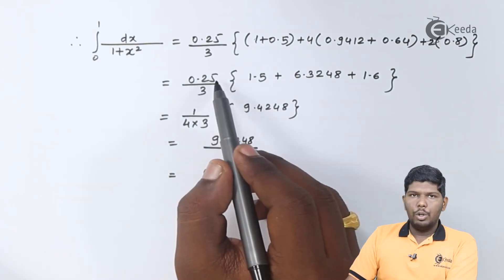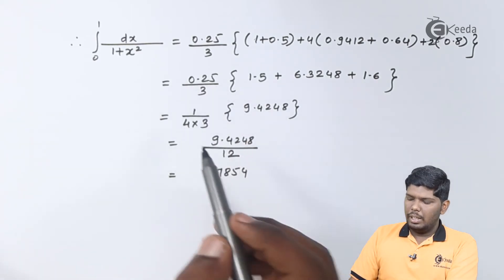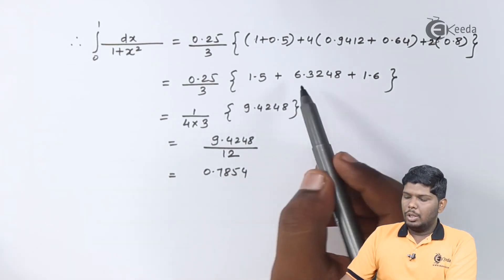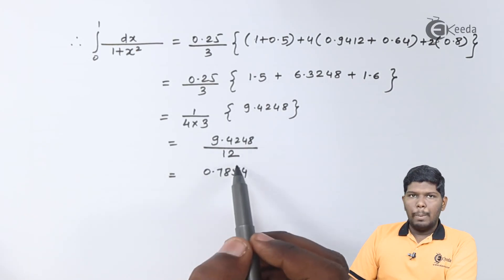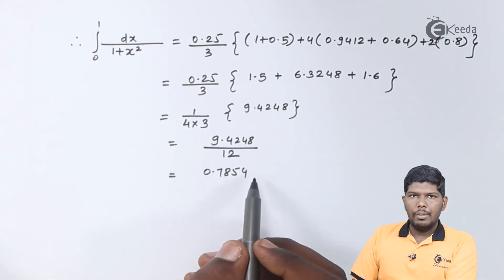Here we can write 0.25 as 1 by 4 into 3 that will give you 1 by 12 and addition of these three terms will give you 9.4248, whose approximate answer will be equal to 0.7854.